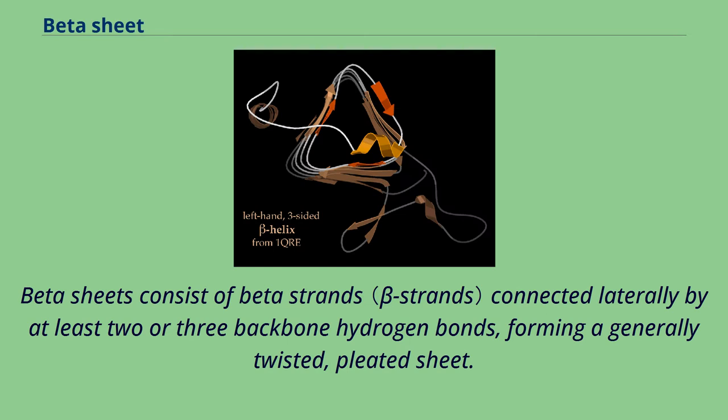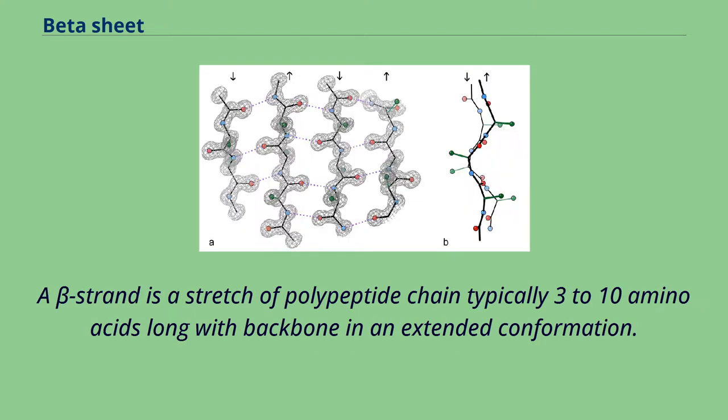Beta sheets consist of beta strands connected laterally by at least two or three backbone hydrogen bonds, forming a generally twisted pleated sheet. A beta strand is a stretch of polypeptide chain typically 3 to 10 amino acids long with backbone in an extended conformation.